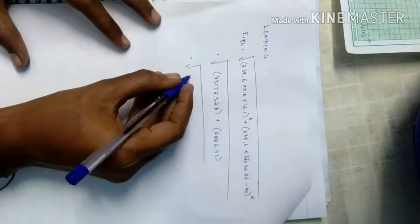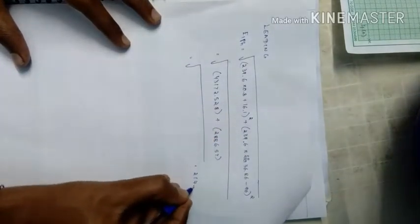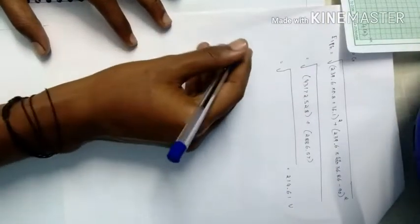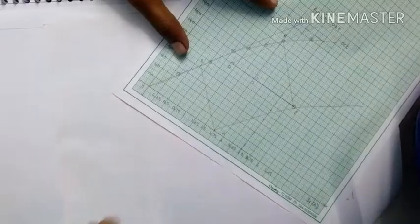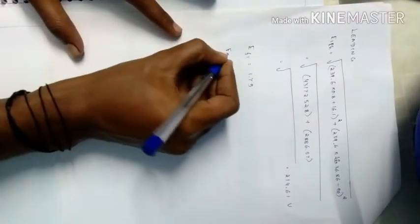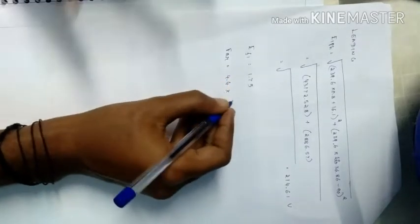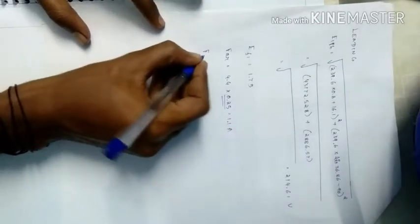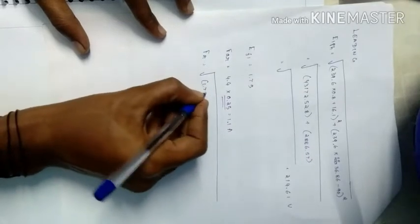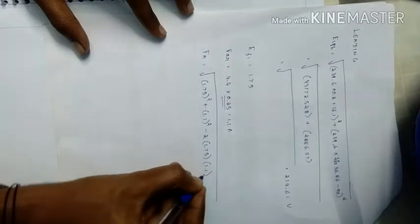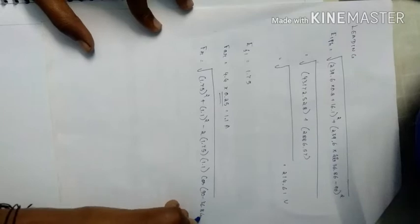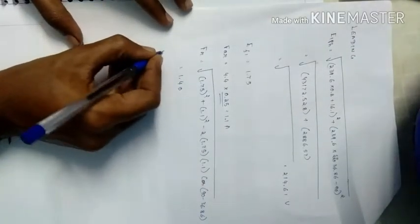FF1, which is the rated short circuit current, is 1.75. FAR, that is 4.4, the x-axis scale value, times 0.25 equals 1.1 amperes. FR equals root of (1.75 plus 1.1) squared plus 2 times 1.75 times 1.1 times cos(90 minus 36.86). The value will be 1.40.